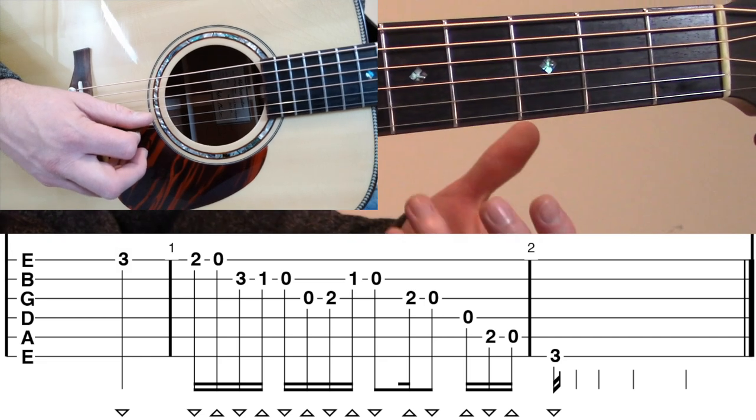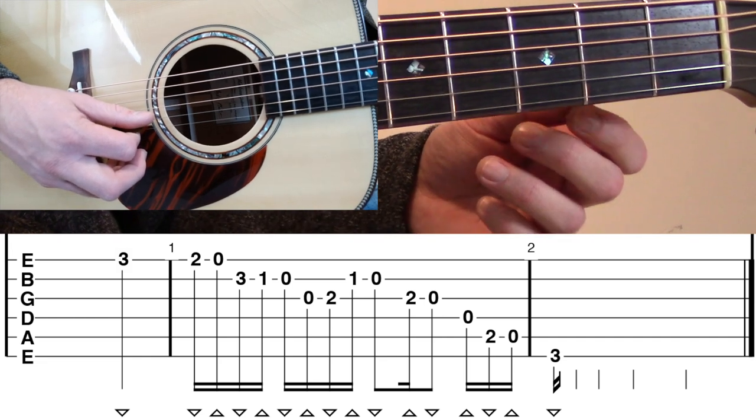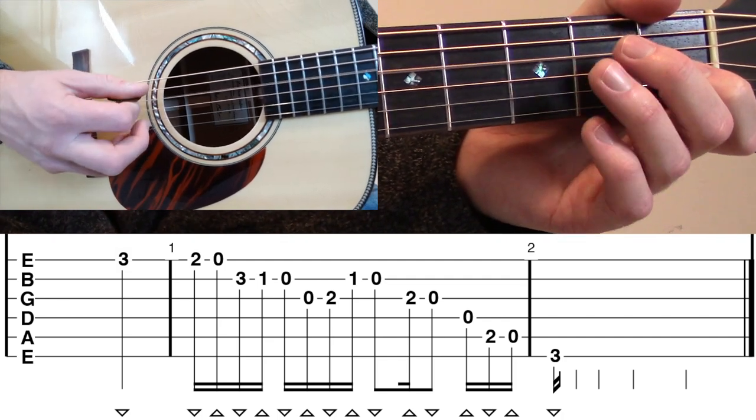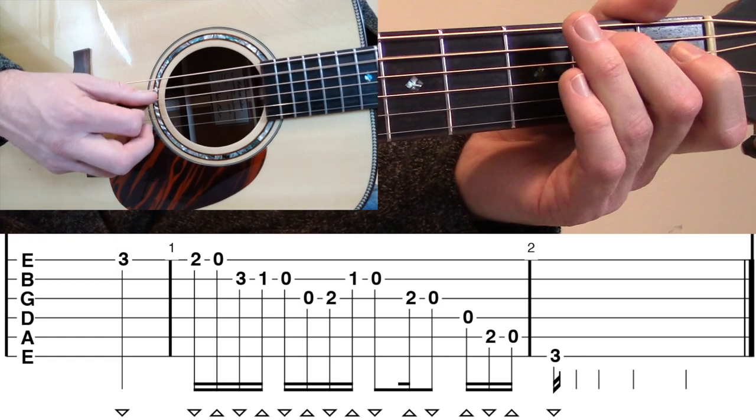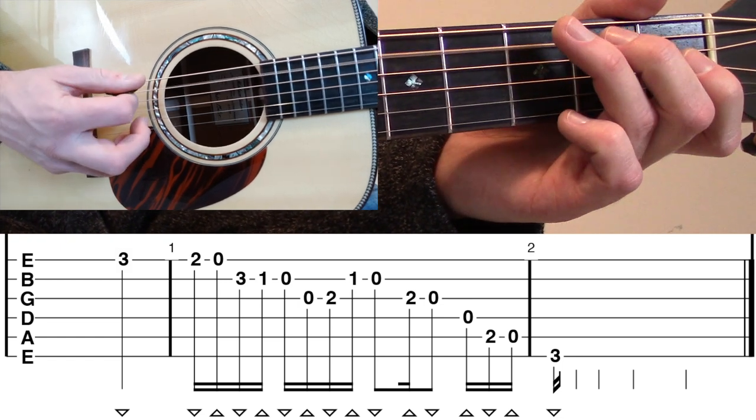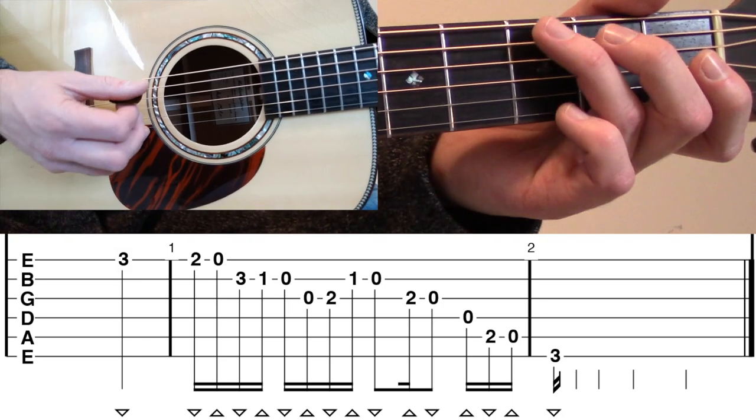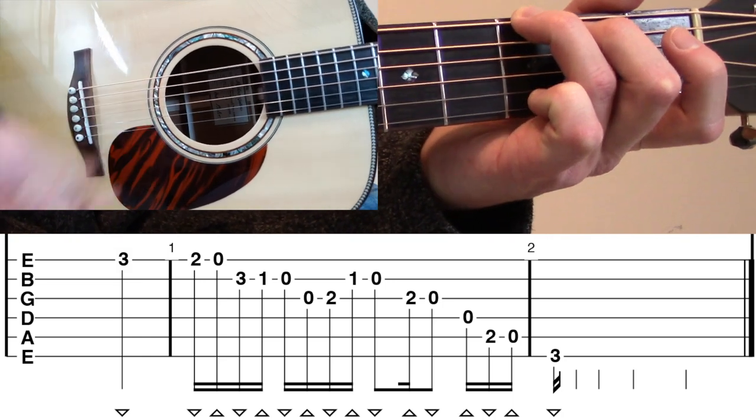Okay, and then right after that eighth note open G there, we're just going to kind of conclude this lick on the open D on an upstroke, second fret A, open A, and then we're going to land on the root note here, which is the third fret low E of that G chord.